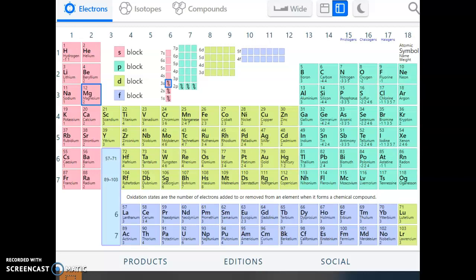Now, the number of the S that it is has to do with the period that it's in. Notice, period number 3, magnesium, we're looking at the 3S orbital. If I look at rubidium, it's in the 5S orbital. It's in period number 5. Pretty cool.